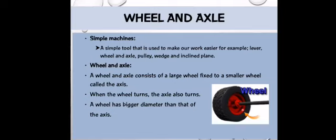So first of all we'll discuss what is wheel and axle. Basically, wheel and axle is a simple machine that helps us to move heavy objects. It consists of a large wheel which is fixed to a smaller wheel.